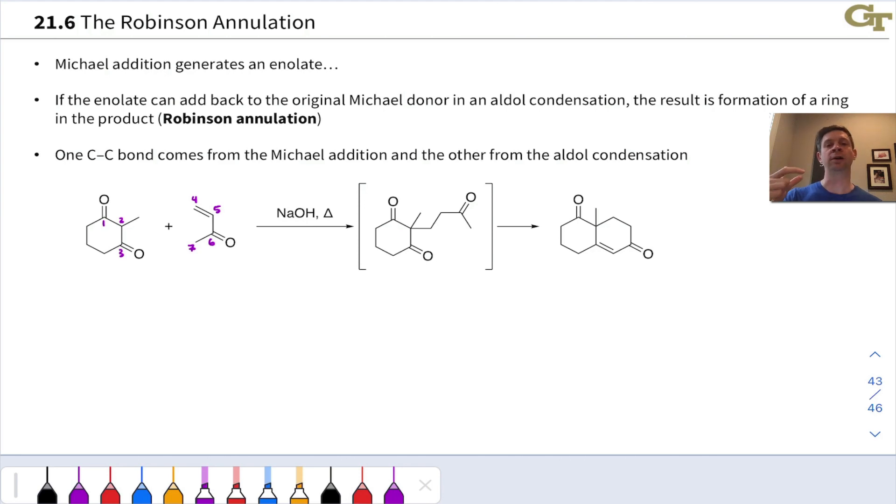Meanwhile, the Michael donor is a nucleophile at the double alpha carbon, but an electrophile at the actual carbonyl carbon. So it too has a nucleophile and electrophile embedded in it, kind of in a one-two pattern.